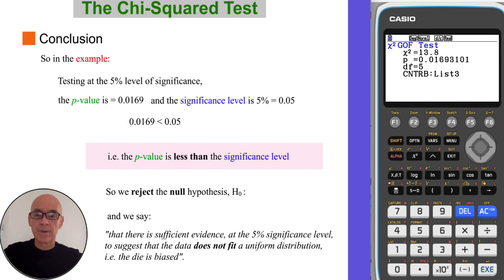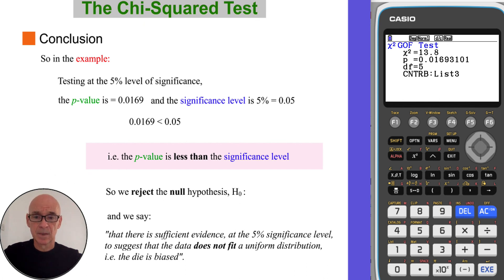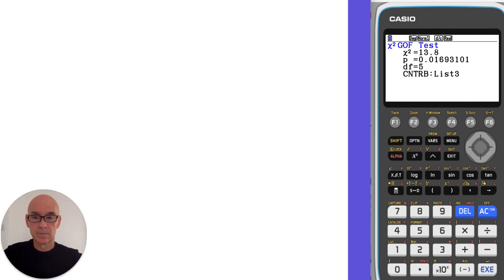In our example, testing at the 5% level of significance, the p-value is 0.0169 and 5% is 0.05. The p-value is less than the significance level, so we reject the null hypothesis. There is sufficient evidence at the 5% significance level to suggest that the data does not fit a uniform distribution — in other words, the die is biased.